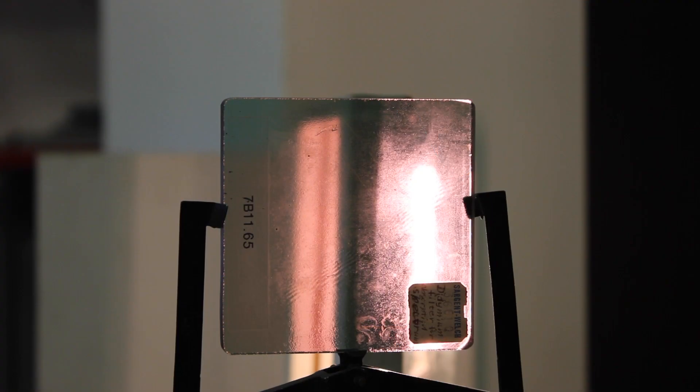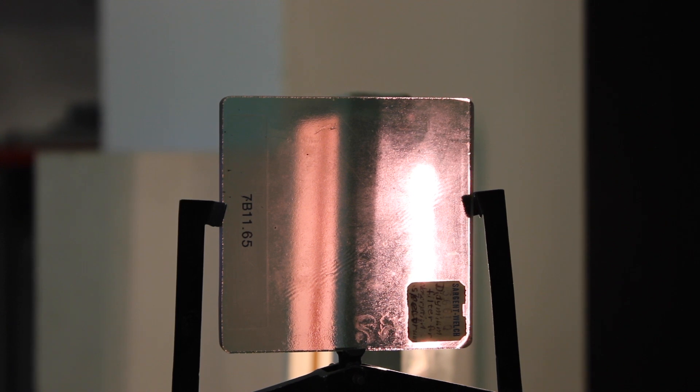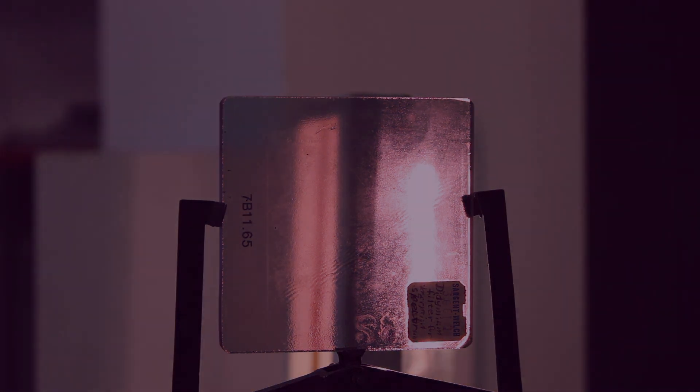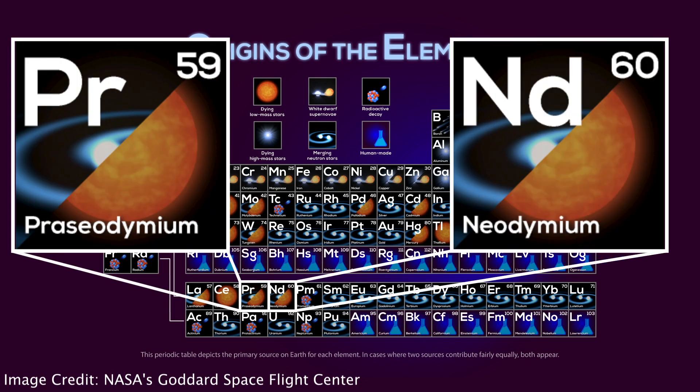This video will make use of the substance didymium, which is incorporated in a glass which we can place in our apparatus's optical path. Didymium is a mixture of the elements praseodymium and neodymium, the 59th and 60th elements of the periodic table. It typically has a light violet tinge to it.